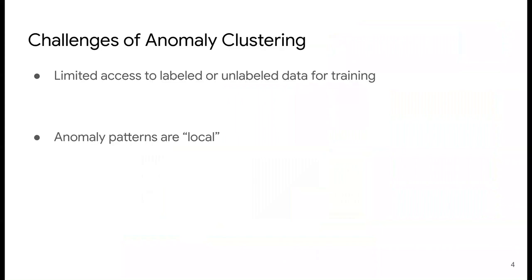Anomaly clustering problem is challenging due to several reasons. First, similarly to anomaly detection, access to labeled training data is limited for many real-world problems. As such, it is typical to solve problems in unsupervised or semi-supervised settings. Second, we find that anomaly patterns are typically local, which is in contrast with the clustering of object-centered natural images.